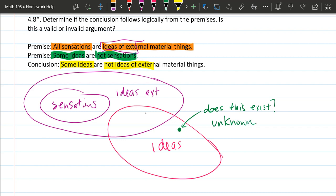And so in the conclusion, it's possible that some ideas are not, it's also possible that there is no ideas that are not ideas of external material things. So we cannot conclude this conclusion.